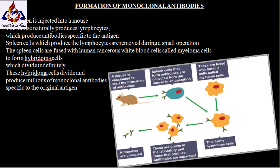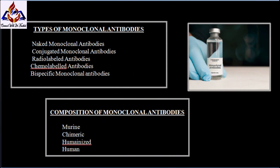Formation of monoclonal antibodies: an antigen is injected into a mouse. The mouse naturally produces lymphocytes which produce antibodies specific to the antigen. Spleen cells which produce the lymphocytes are removed during a small operation. The spleen cells are fused with human cancerous white blood cells called myeloma cells to form hybridoma cells, which divide indefinitely. These hybridoma cells divide and produce millions of monoclonal antibodies specific to the original antigen.